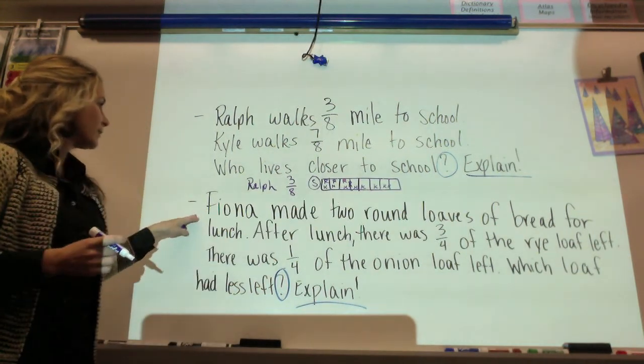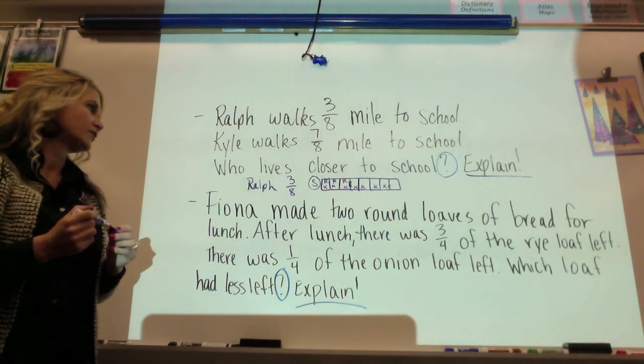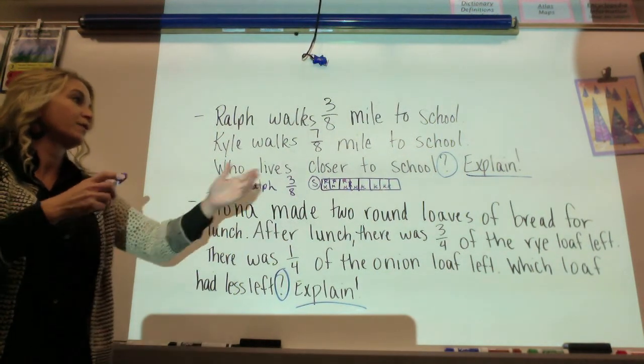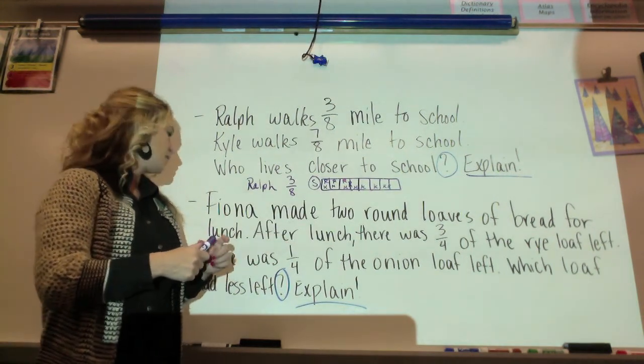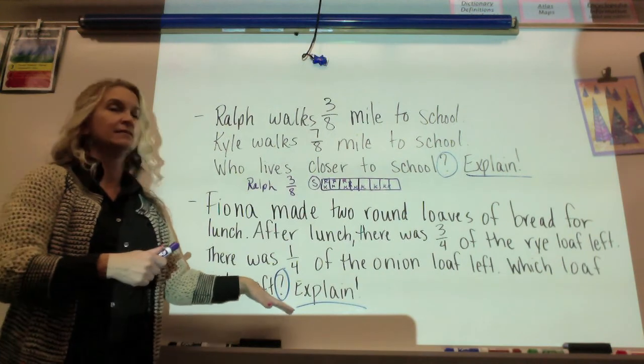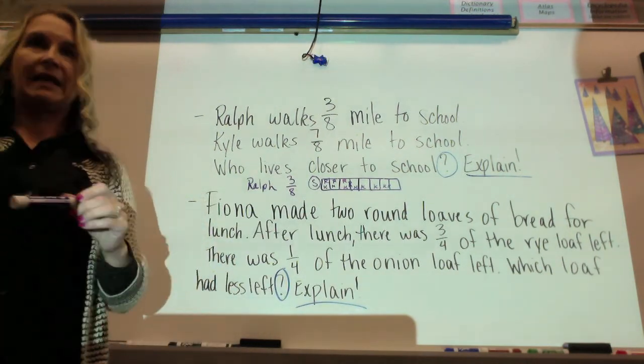Number two. Fiona made two round loaves of bread for lunch. After lunch, there was three-quarters of the rye loaf left. There was one-fourth of the onion loaf left. Which loaf had less left? And explain. Who would like to try this one? Malia.